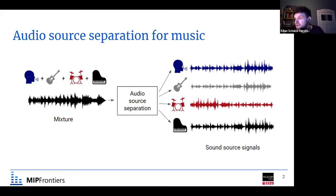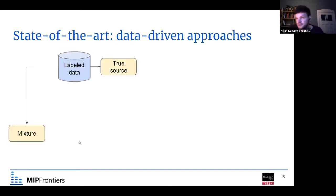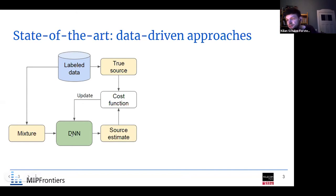In my project, I'm mainly concerned with estimating the singing voice from a mixture. There are many ways to do source separation, and for singing voice separation, the best performance today is achieved with data-driven methods — at the moment, of course, deep neural networks. We have a dataset of labeled data, which means we have a bunch of mixtures and for those mixture signals, we have the isolated source signals available.